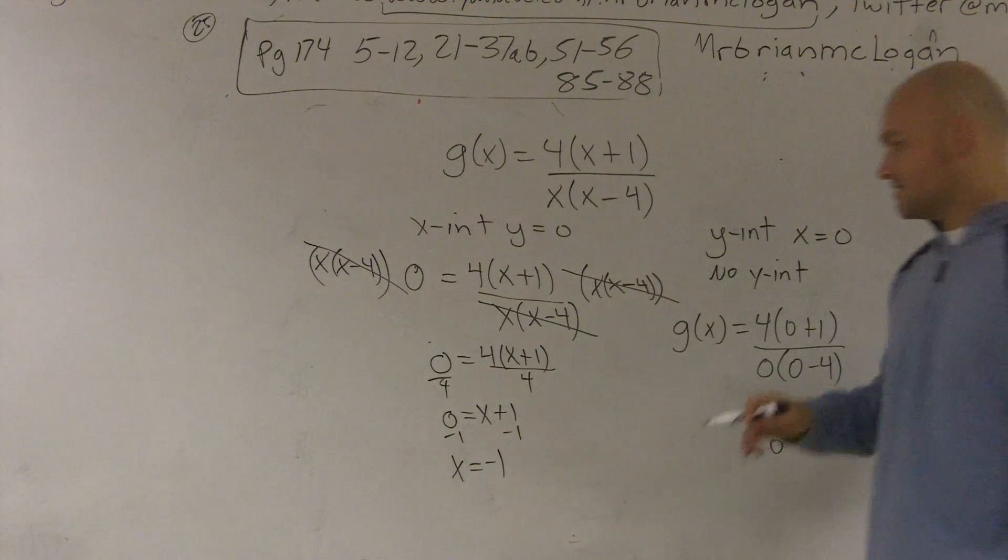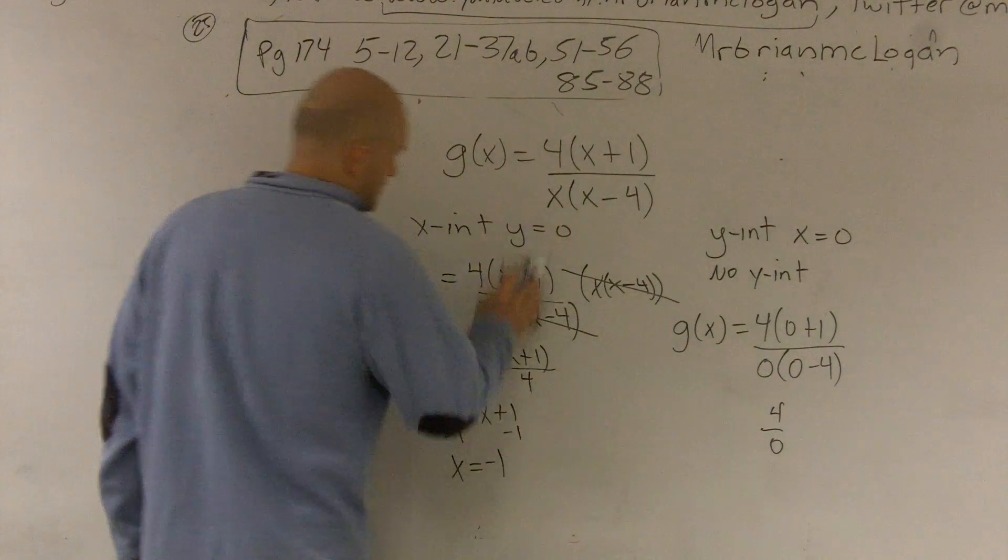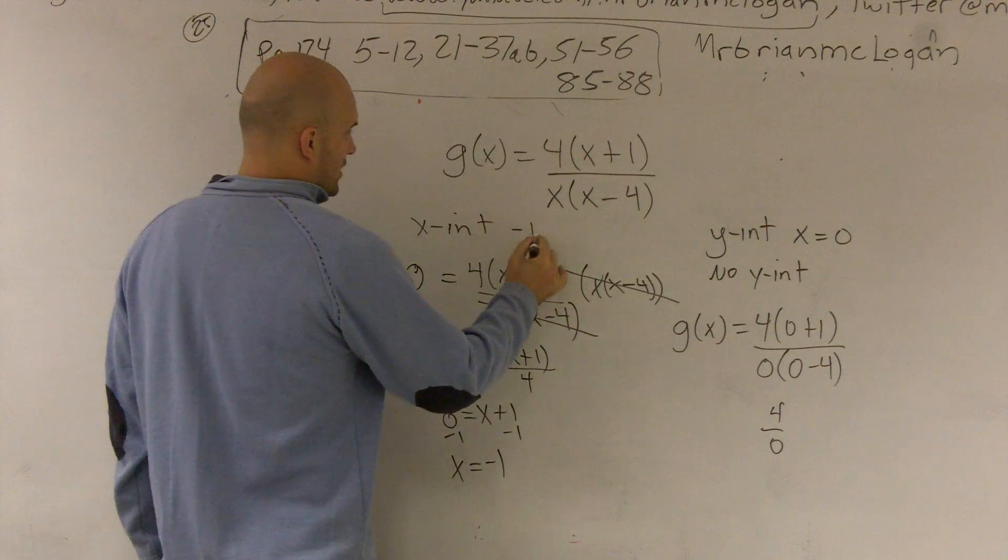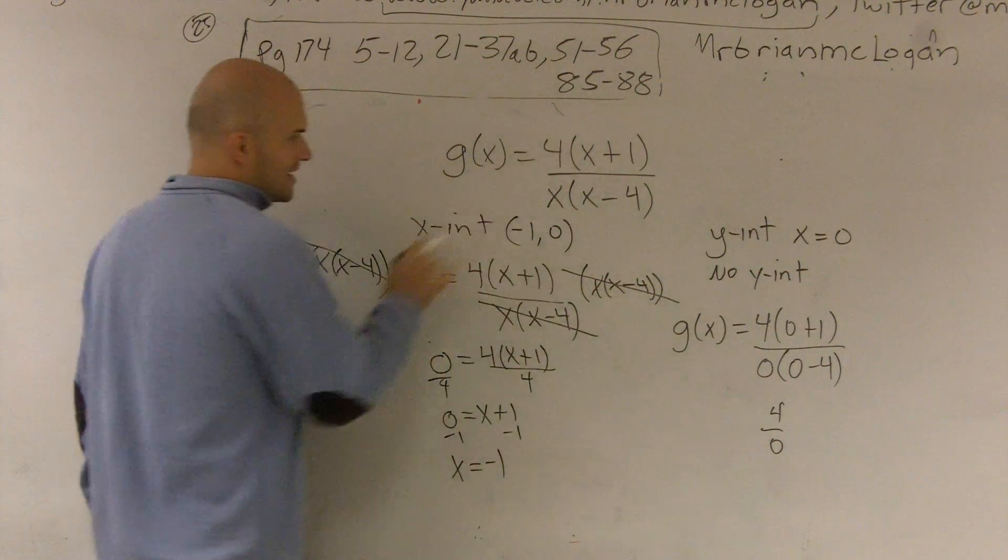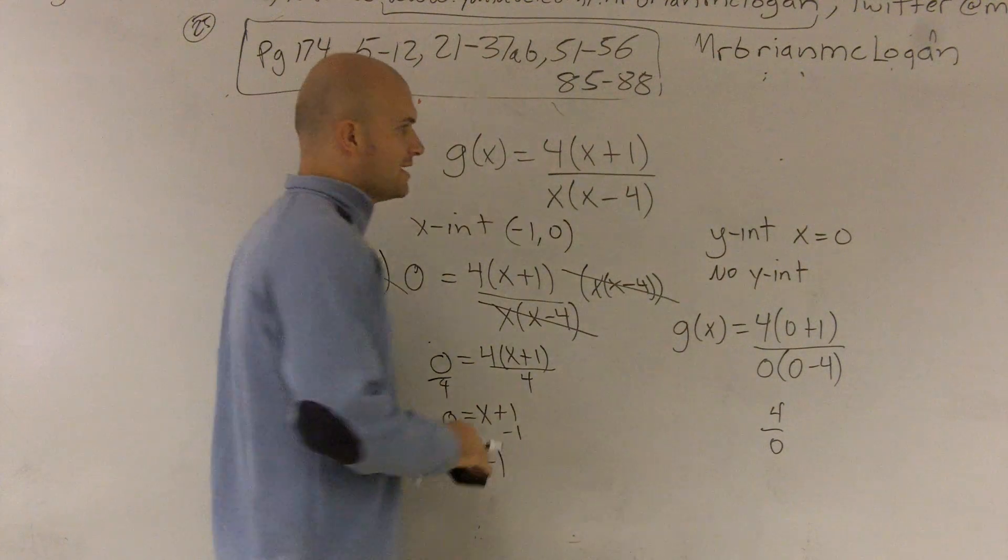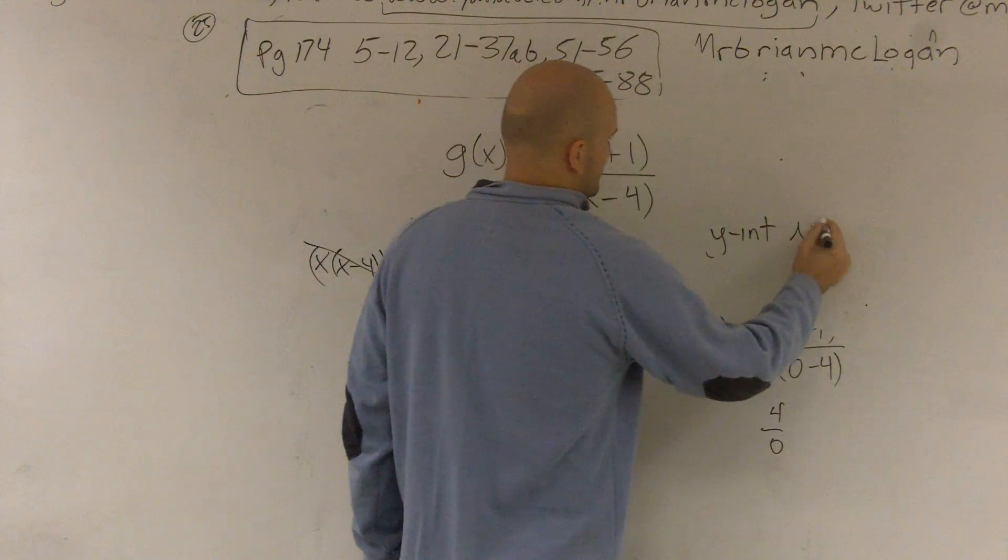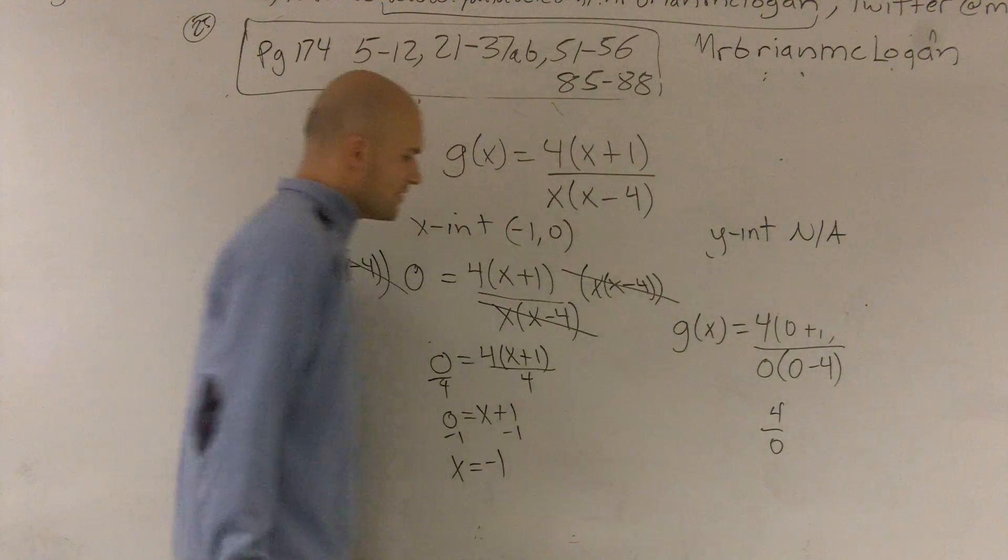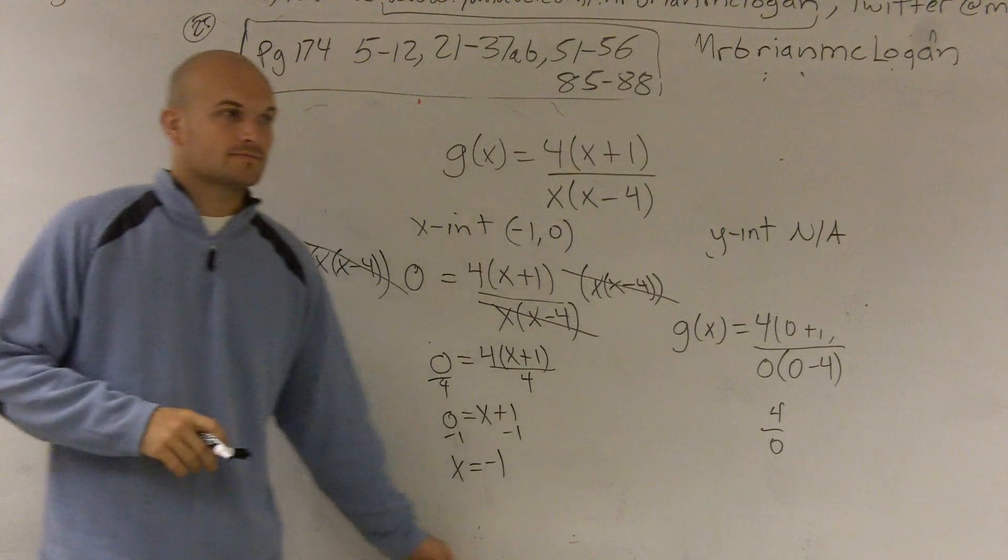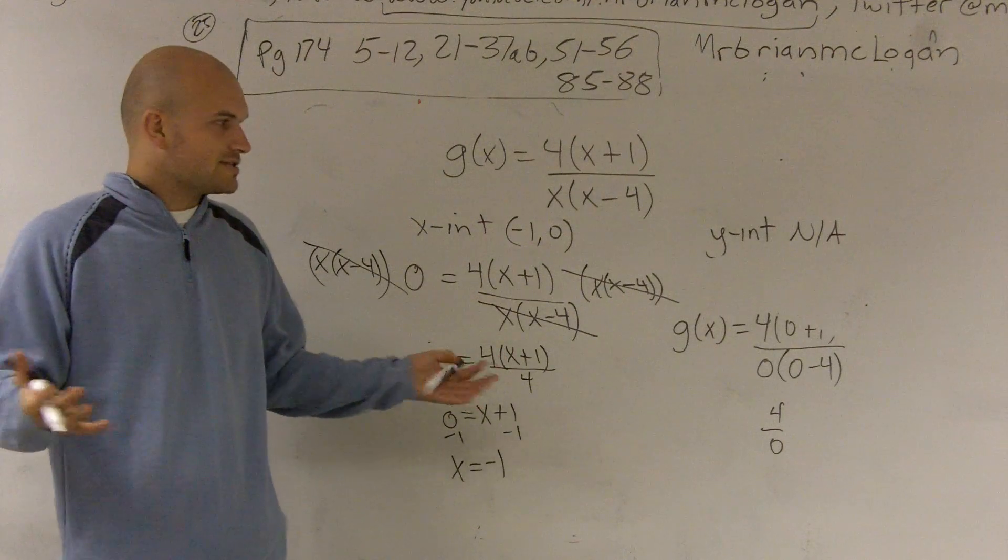So my x-intercept occurs at the point of negative 1 comma 0. That's my x-intercept. And my y-intercept does not exist. Not available. I'll just kind of do a quick little reference. So that's how you find the x and y-intercepts.